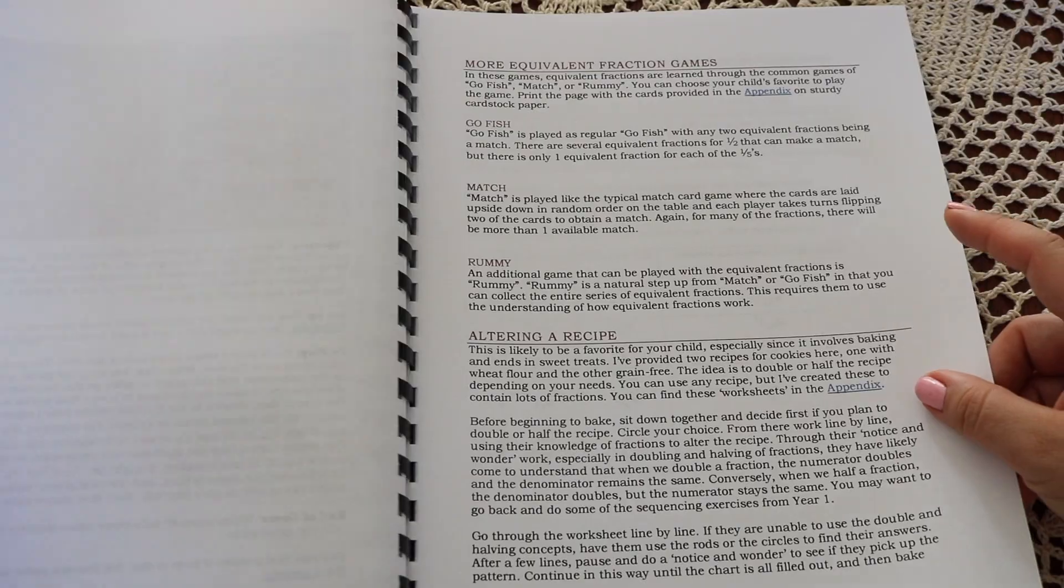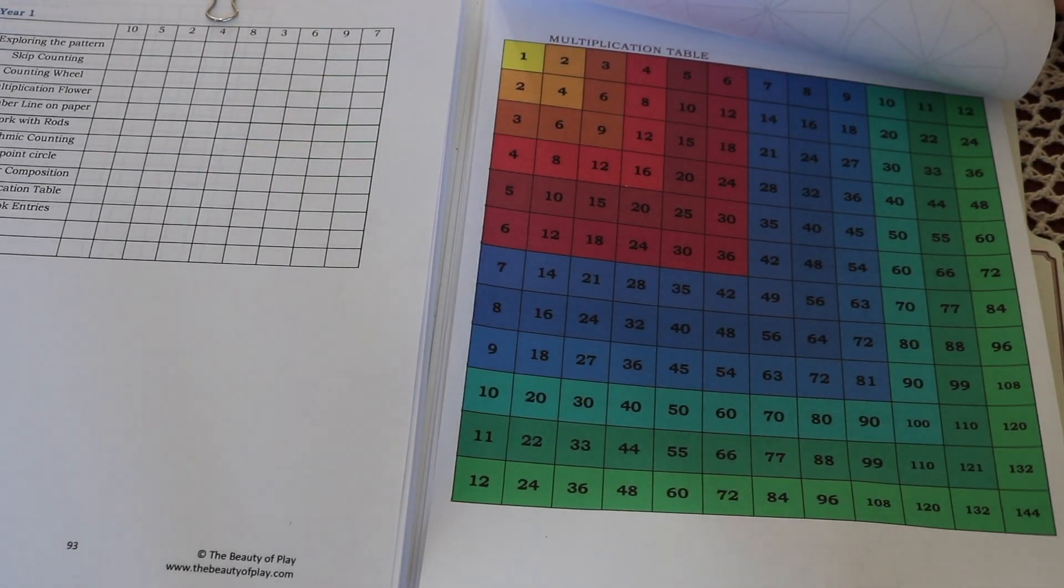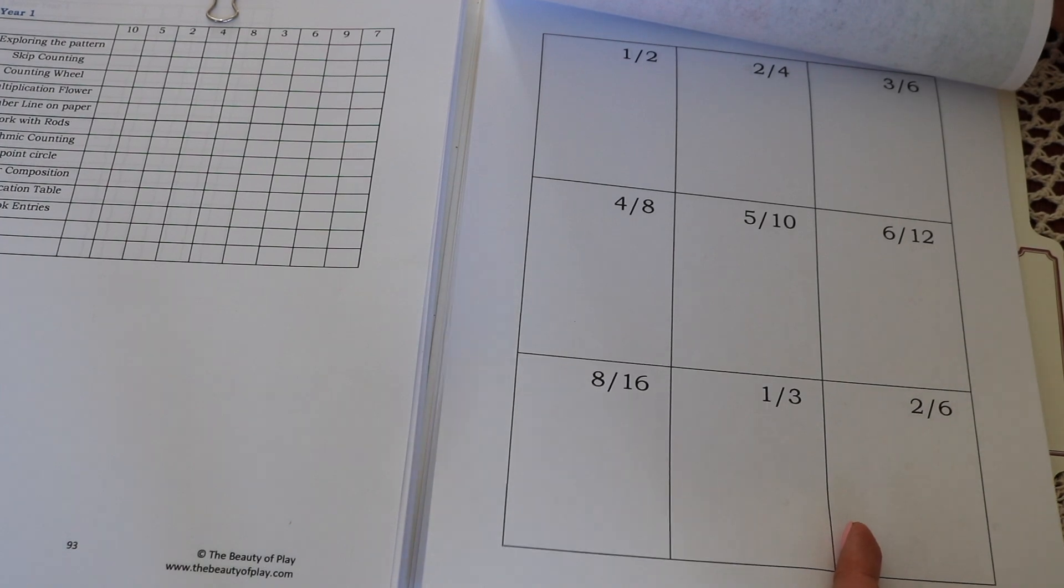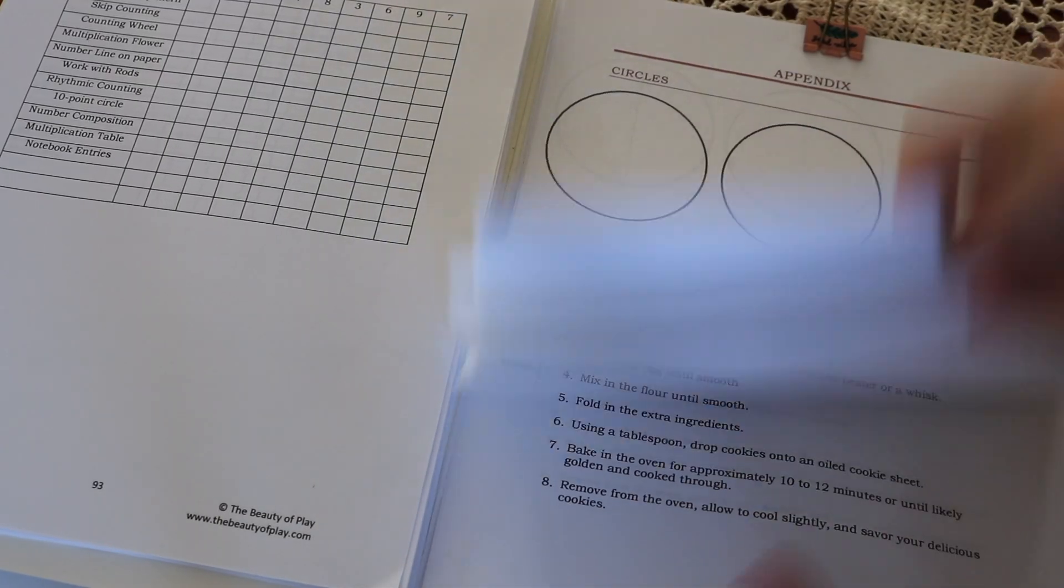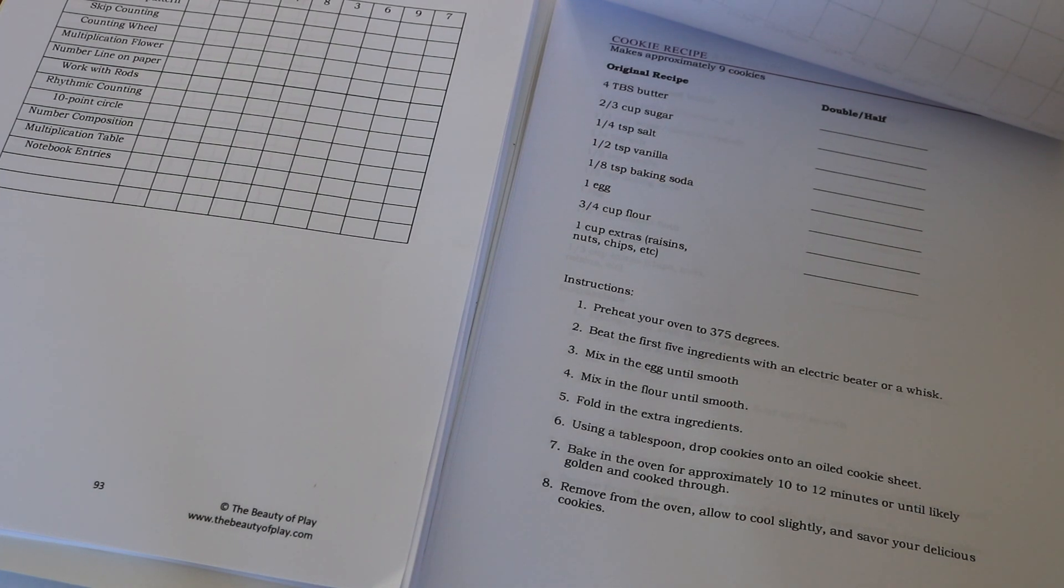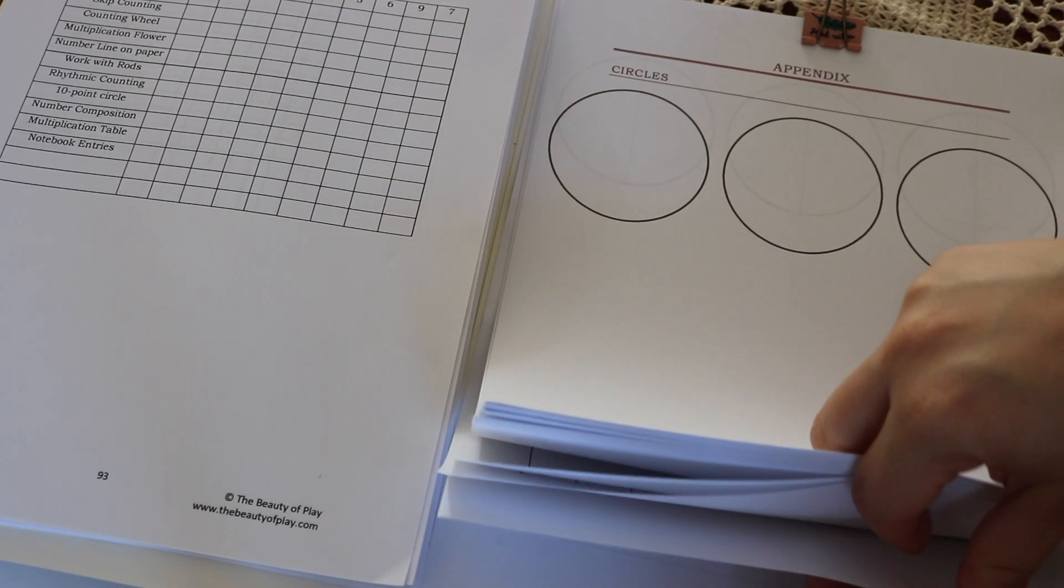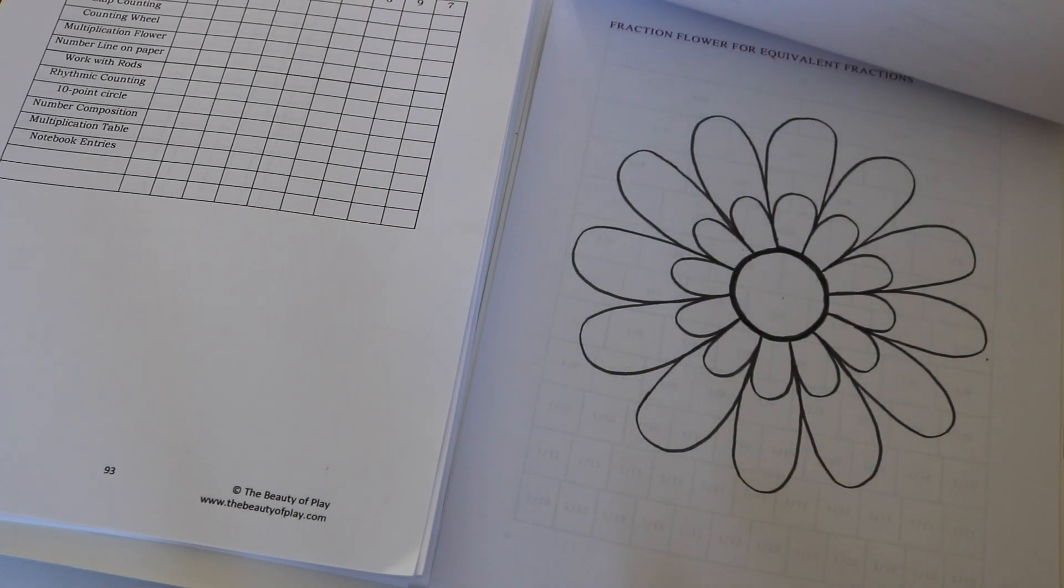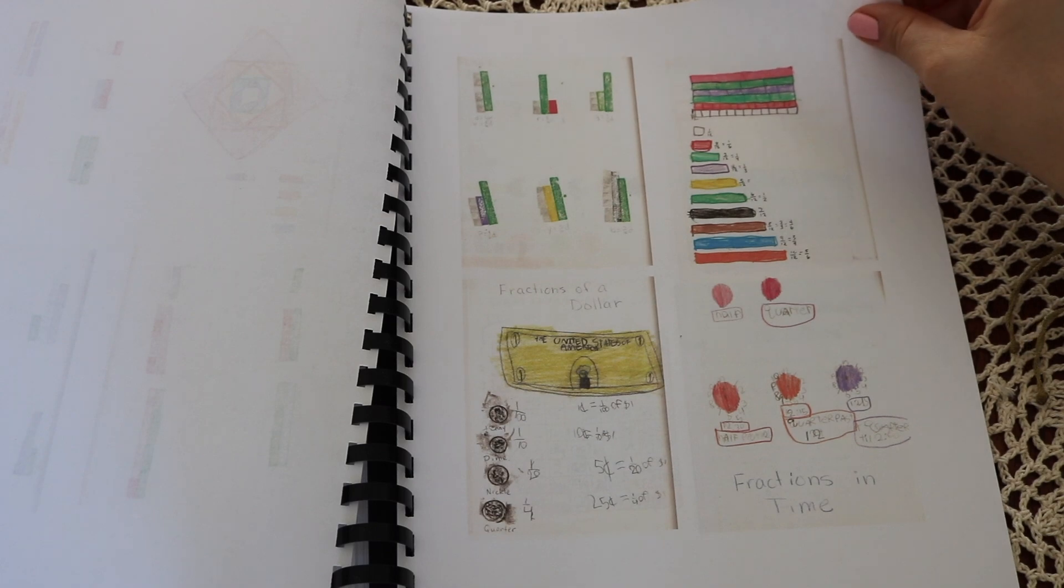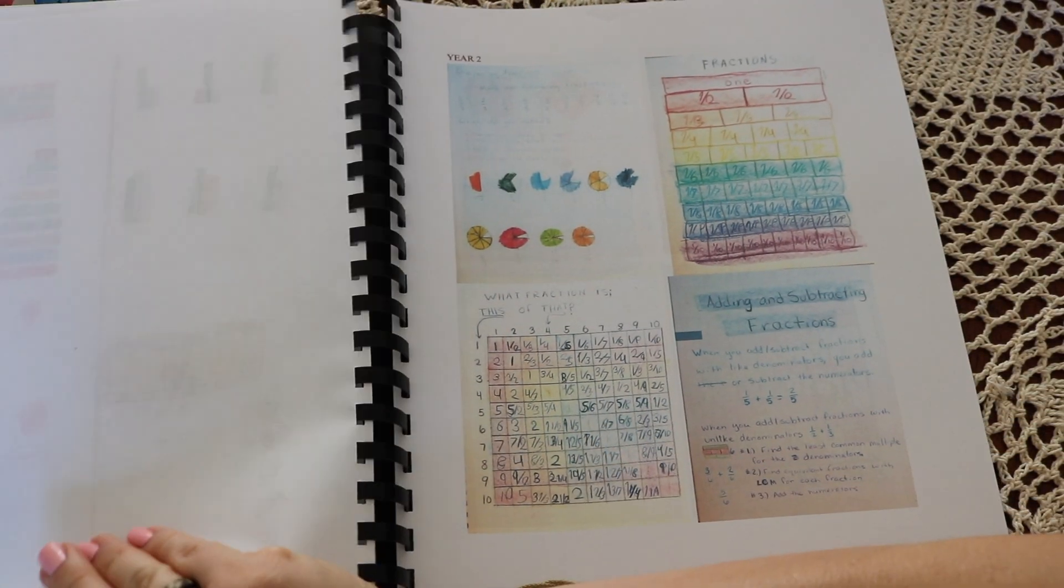Again, in this guide, you'll also find links to her support videos and templates and worksheets. All right, those are the flip throughs of The Beauty of Play's multiplication and division bundle year one through three and fractions bundle year one to two.